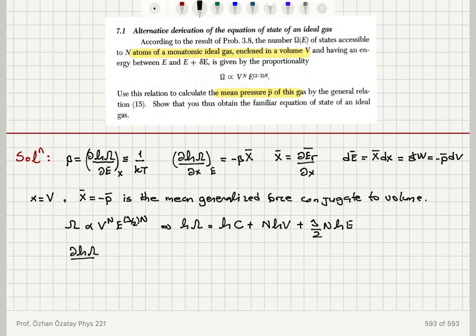Now, if I take the derivative of ln omega with respect to volume at constant energy, I will obtain N over V. And this is equal to minus beta x bar,